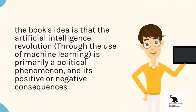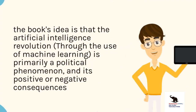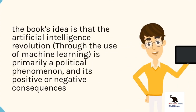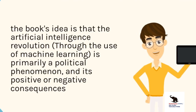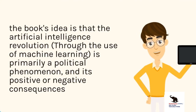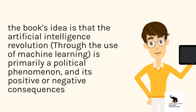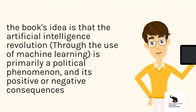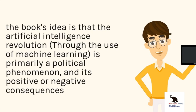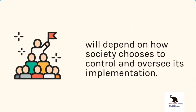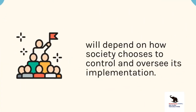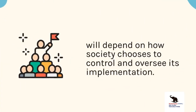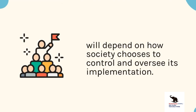The book's idea is that the artificial intelligence revolution, through the use of machine learning, is primarily a political phenomenon, and its positive or negative consequences will depend on how society chooses to control and oversee its implementation.